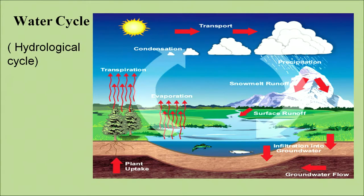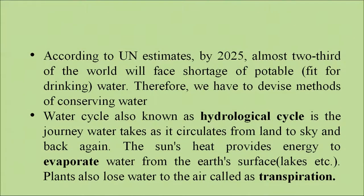We will be talking about the water cycle in greater detail in the following slides. According to UN estimates, by 2025, almost two-thirds of the world will face a shortage of potable, that is drinking water. Therefore, we have to devise methods of conserving water. The water cycle, also known as the hydrological cycle, is the journey of water as it circulates from land to sky and back again. Sun's heat provides energy to evaporate water from the Earth's surface. Plants also lose water to the air through transpiration, so evaporation and transpiration are the two processes through which water reaches the air.